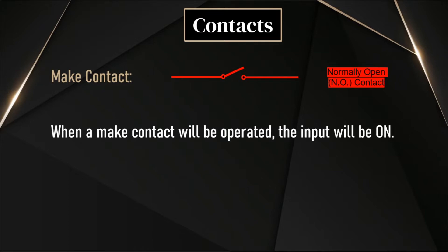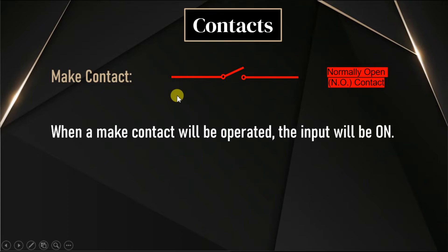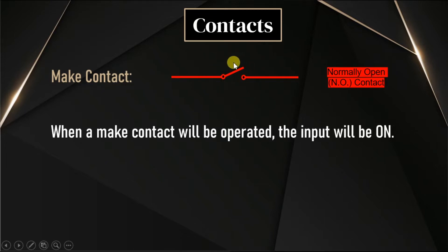So what are these? I have one switch here. The state of the switch is initially open. We have to make a contact — then only the status of the switch will change from its present state to another state. We can say the present state is open. Whenever the switch is activated, the state will change to close. That's why this is called make contact — you have to make a contact for closing this switch.